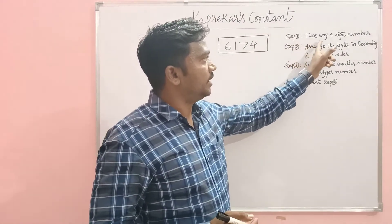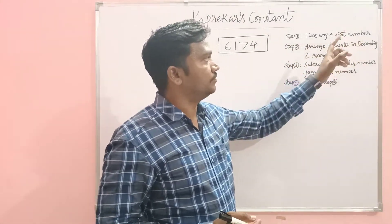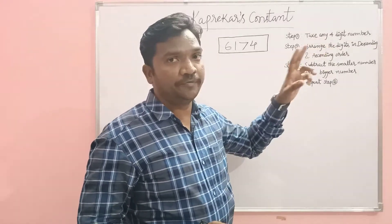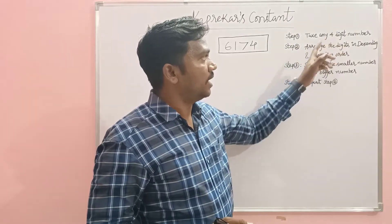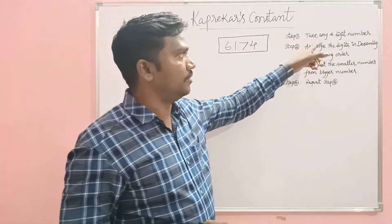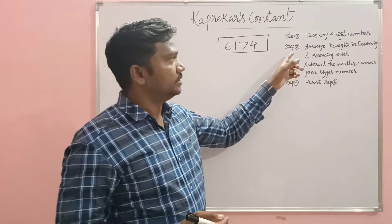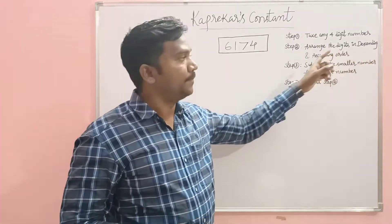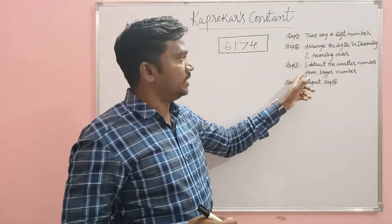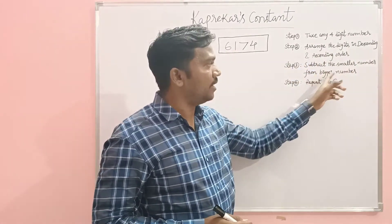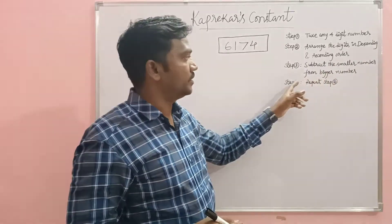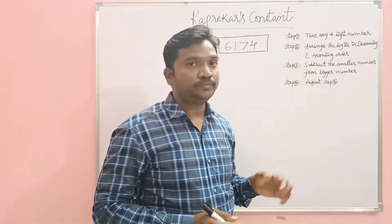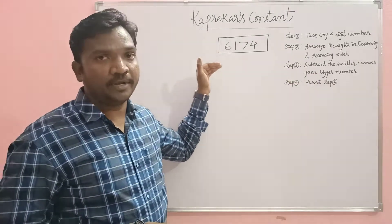Step one: take any four-digit number. Remember, there must be at least two different digits, and leading zeros are also allowed. Step two: arrange the digits in descending and ascending order. Step three: subtract the smaller number from the bigger number. Step four: repeat step two until we get Kaprekar's Constant.